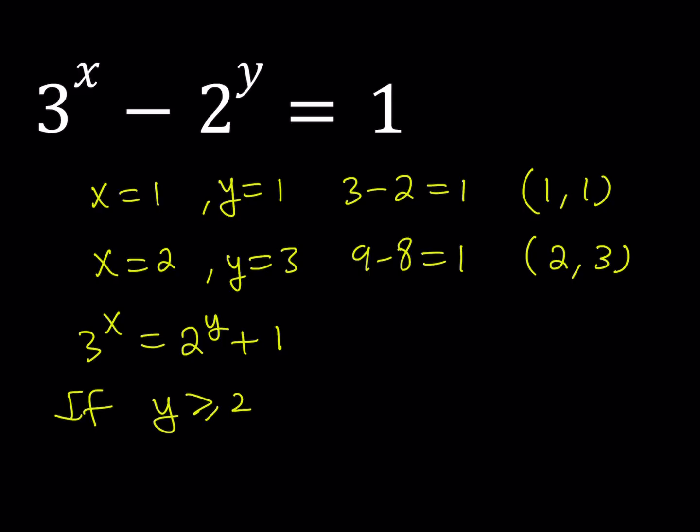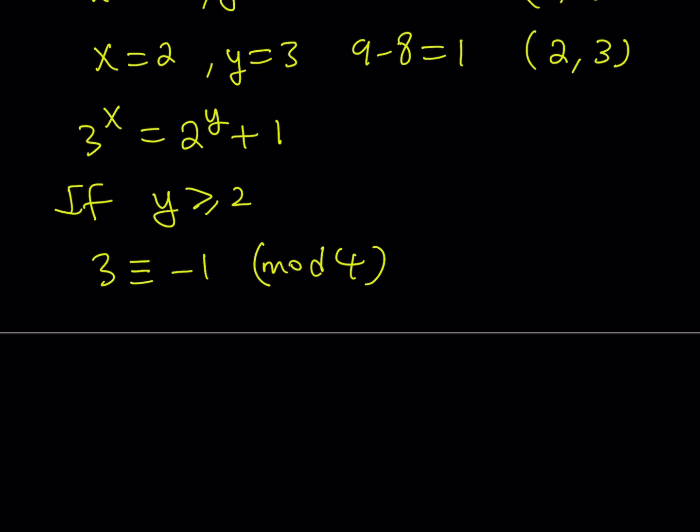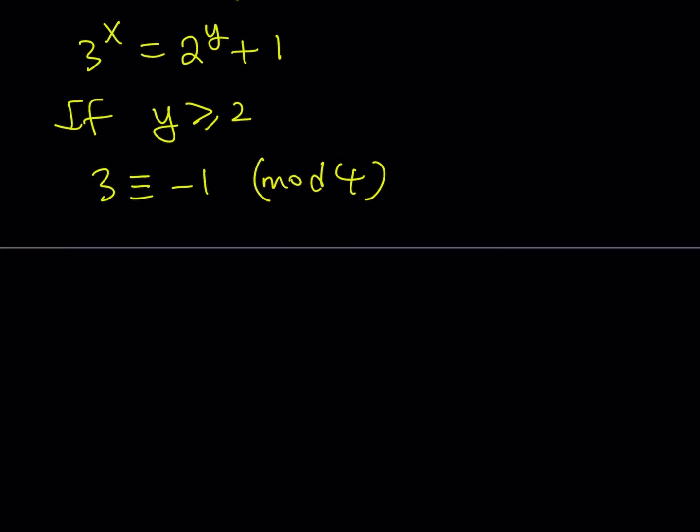Let me write down 3 to the power x as 2 to the power y plus 1 first. Now, if y is greater than or equal to 2. Why did I pick 2? Because we don't have that, and it's significant because if y equals 2, we get a 4 on the right-hand side. So I'm going to be looking at this equation in mod 4. What is 3 equivalent to in mod 4? We can say that 3 is equivalent to negative 1 mod 4.